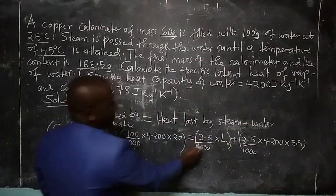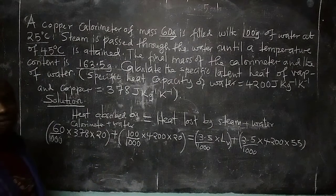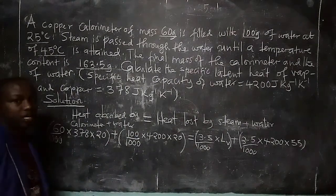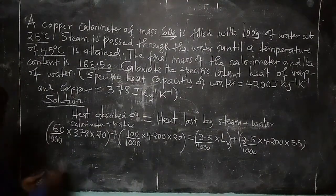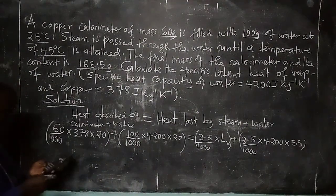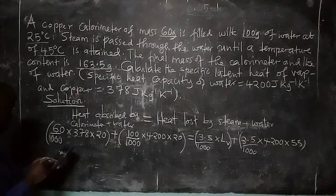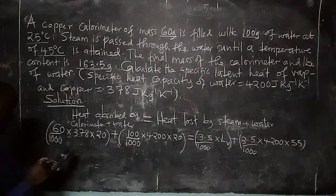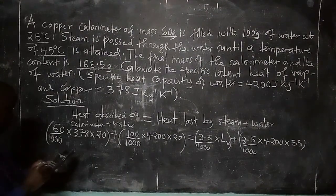Now we can obtain the value of latent heat of vaporization. On the left-hand side we have 60 divided by 1000, times 378, times 20, which gives 453.6. Then we divide everything accordingly on the other side.